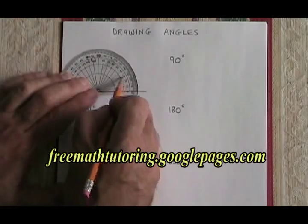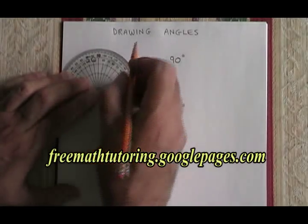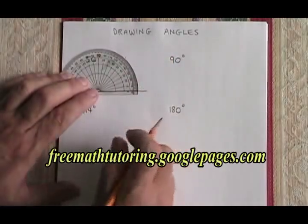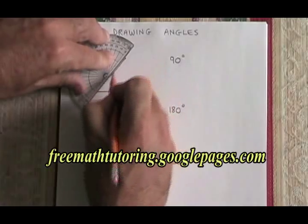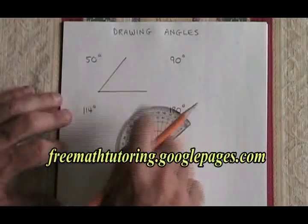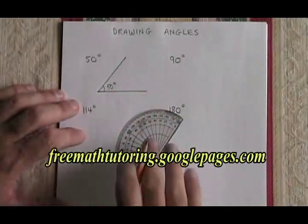This time I'm using the inner numbers on the protractor. I go up to 50 and put a line there that shows a 50 degree angle with the line that I already drew. It is that easy to draw a 50 degree angle.